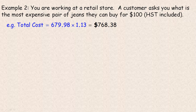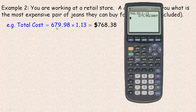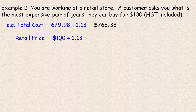If somebody told me the after-tax price was $768.38, tax is 13%, and asked me to find the original price, I could take the $768.38 and do the opposite of multiplying by 1.13 — divide by 1.13 — and we get $679.98, the original amount. It's not as simple as finding 13% of $100 and subtracting it, because you'd be finding 13% of the final amount, not the original price. So to get the retail price, we take the $100 and divide it by 1.13.